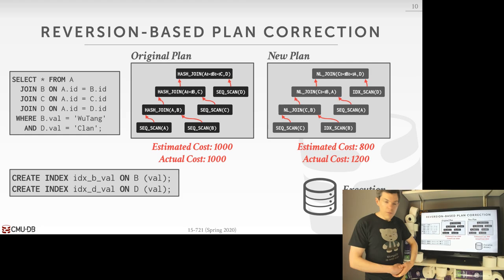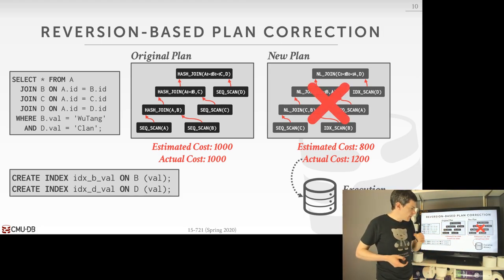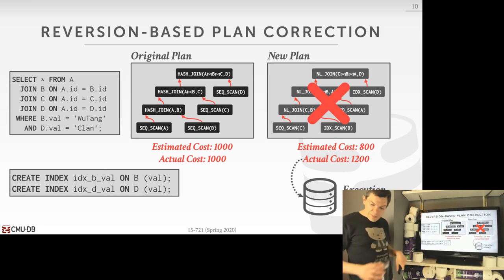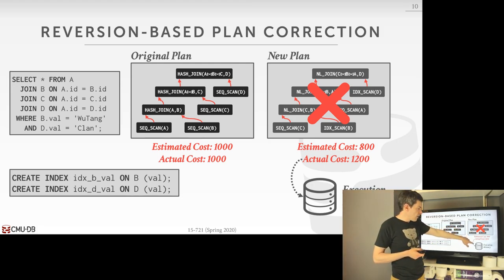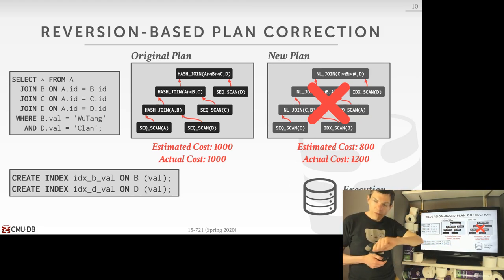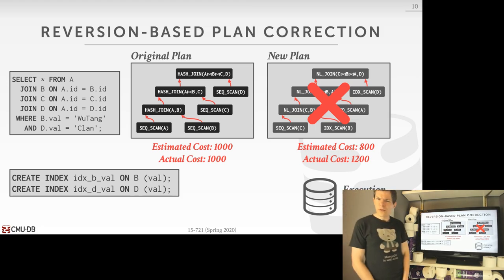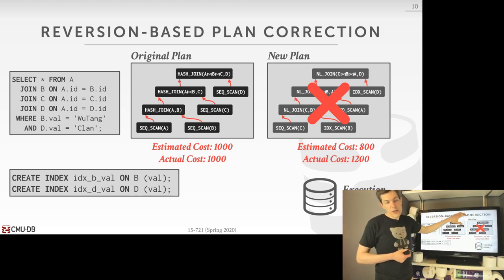We incorrectly estimated that nested loop joins would be cheaper than hash joins, so we picked nested loop joins. Once we put this in our execution history and recognize this new plan performed worse than the original, the next time we invoke the query we revert back to the plan that actually performed better. This approach is in Microsoft SQL Server and Oracle has something similar since around 2012-2013. But it's pretty coarse-grained — basically saying 'this plan is bad, let me switch back to the old one.' It's an all-or-nothing thing.